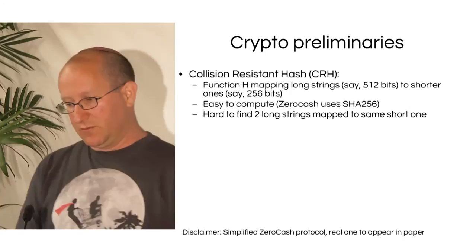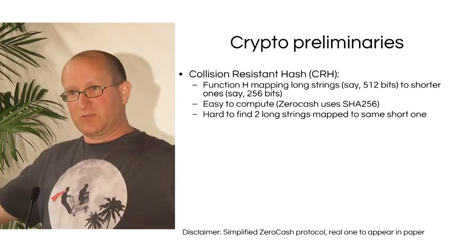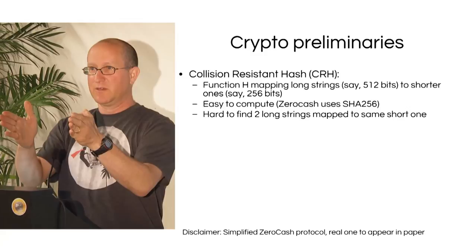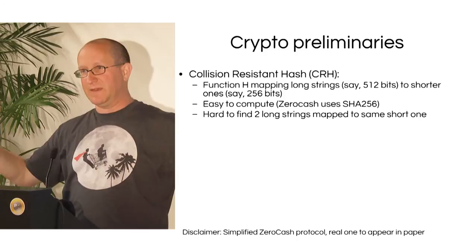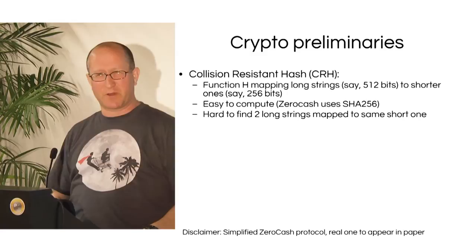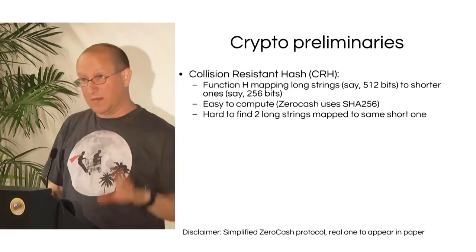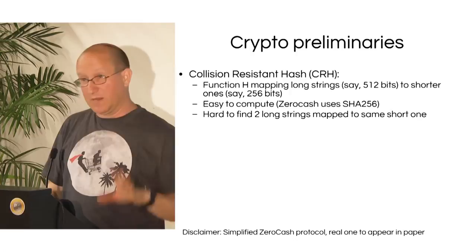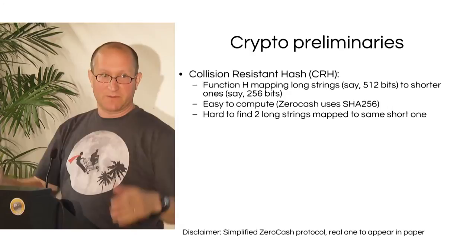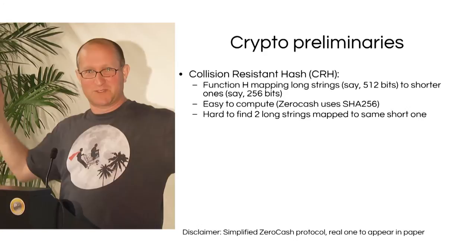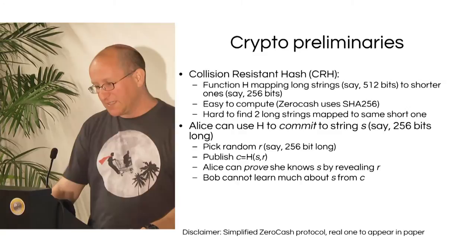Some crypto preliminaries: a collision-resistant hash function shrinks strings — for concreteness, it takes 512 bits and maps them to 256 bits. It's very easy to compute but very hard to invert or find a collision. For SHA-256, which we use, no one has found a collision to this day — despite the fact that mathematically many collisions must exist by the pigeonhole principle. A collision-resistant hash function is very useful for committing to information and hiding it.